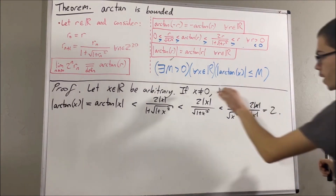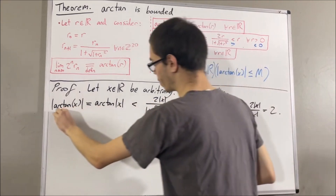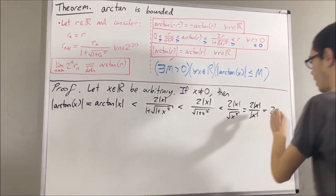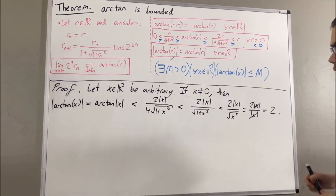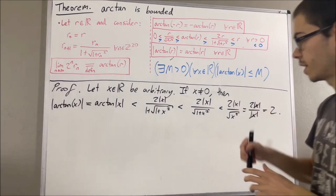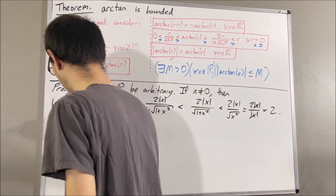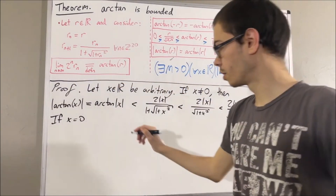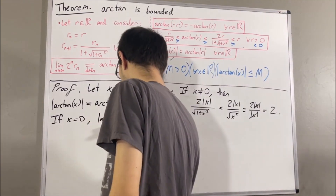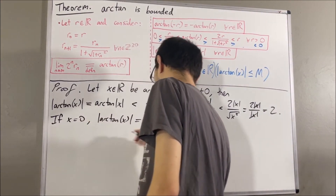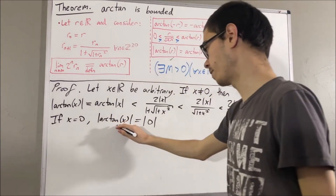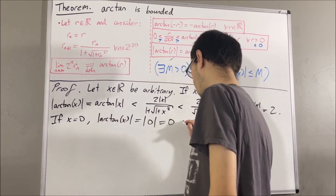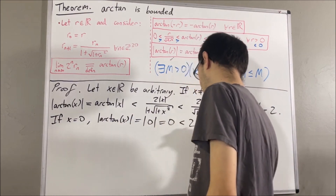So if x is not equal to 0, then the absolute value of arctangent of x is less than 2. If we consider the case x equals 0, well, we know that the arctangent of 0 is 0. So the absolute value of arctangent of x is equal to the absolute value of 0, which equals 0, which is less than 2.